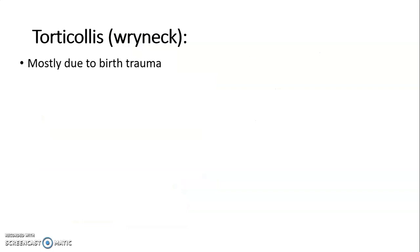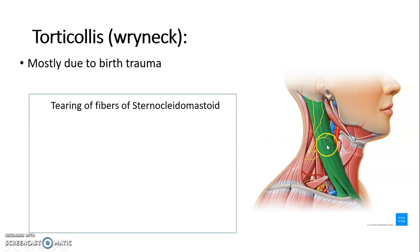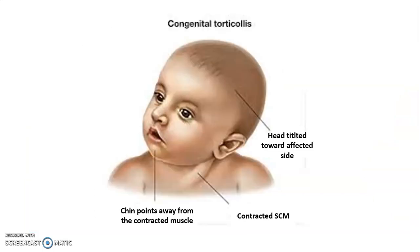Torticollis, or wry neck, is mostly due to a birth defect involving tearing of fibers of the sternocleidomastoid muscle — a muscle of the neck. This is followed by hematoma formation, ultimately leading to fibrosis and shortening of the muscle. The head is tilted toward the affected side, and the chin points away from the contracted muscle. These are the typical features of congenital torticollis.